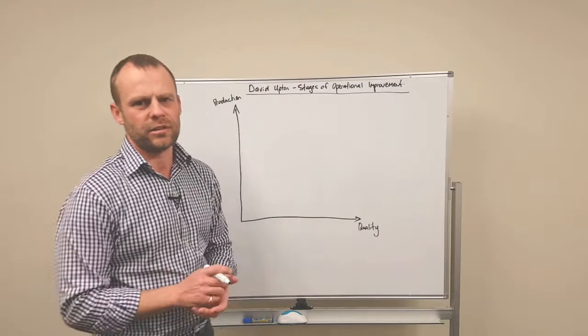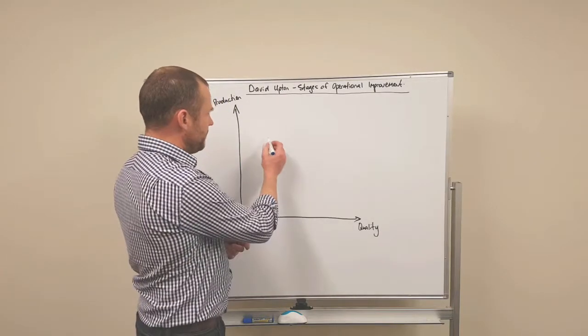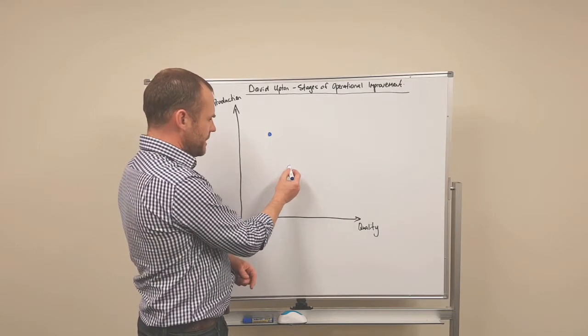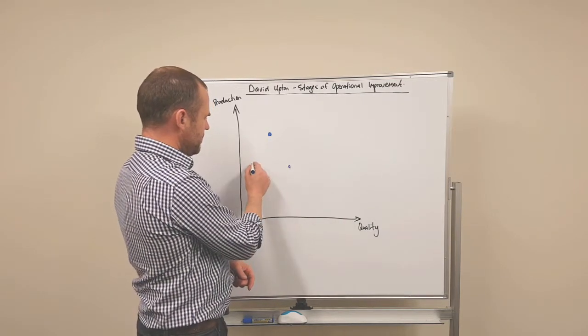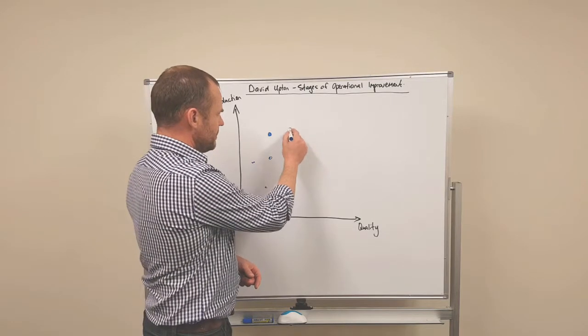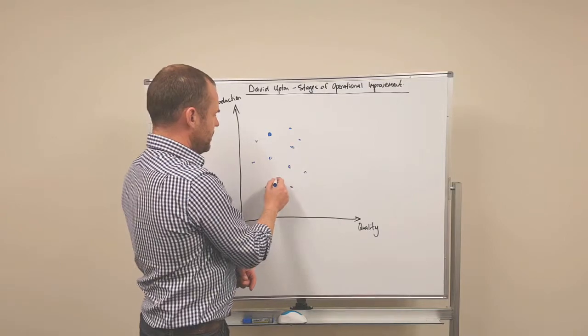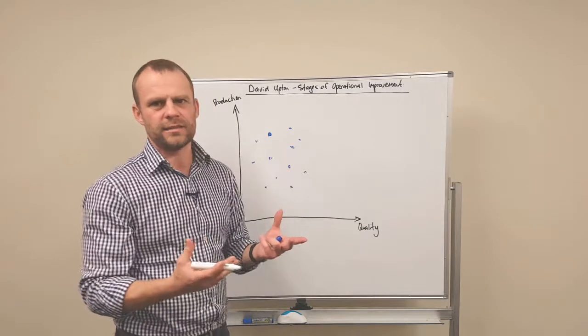Normally when you come across an operation, on one day they will run at this kind of production and quality. Another day will be down here, there, and all these days, all these different scenarios just show that the place isn't under control.